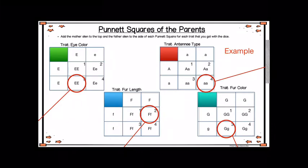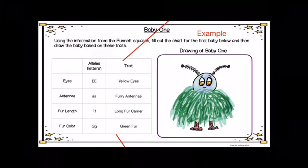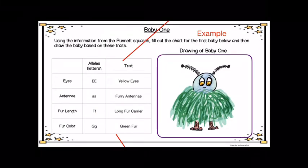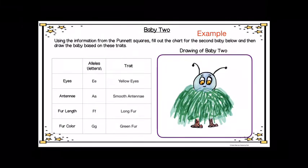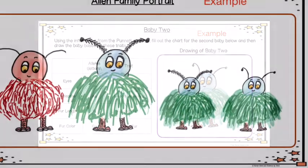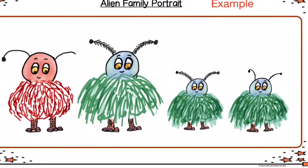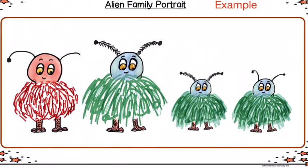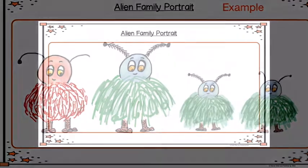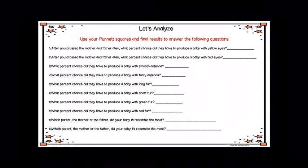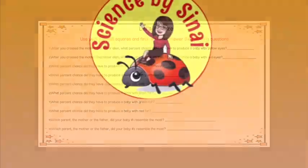Next, they fill out the Punnett squares and throw the dice again, getting between one and four to determine the traits of baby one and baby two. Of course, there is an alien family portrait, and then an analysis of all the Punnett squares at the end.